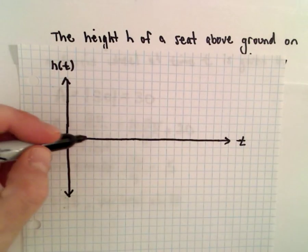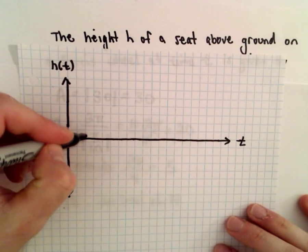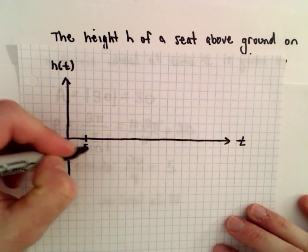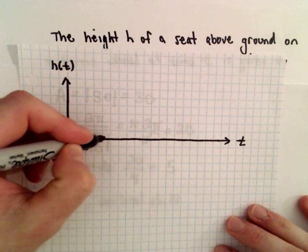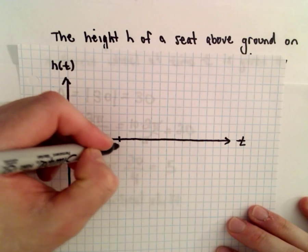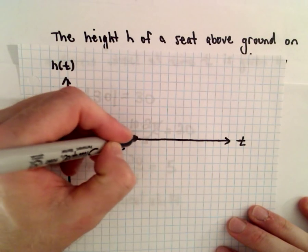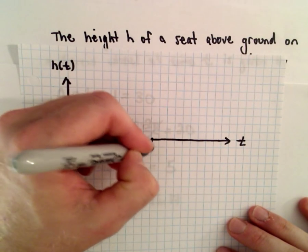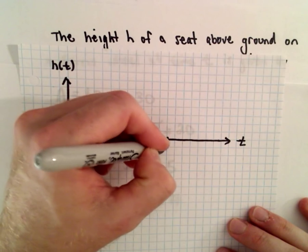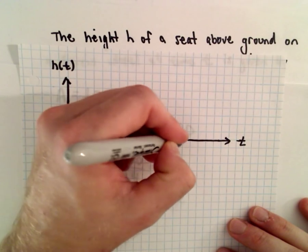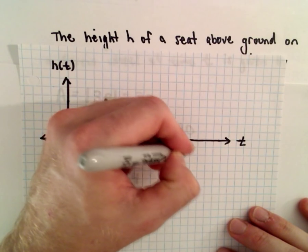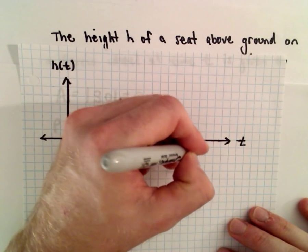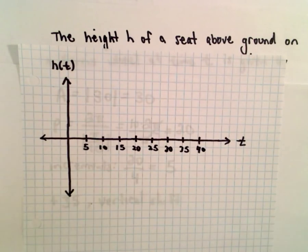I'm going to use increments of 5 on the x-axis: 5, 10, 15, 20, 25, 30, 35, and 40.